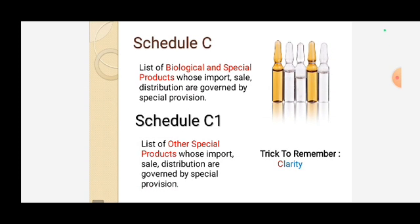Schedule C is very important. Schedule C is the list of biological and special products whose import, sale, and distribution are governed by special provisions. The trick to remember is 'C for clarity.' Schedule C covers the list of special products whose import, sale, and distribution are governed by special provisions.